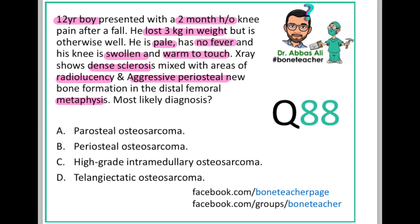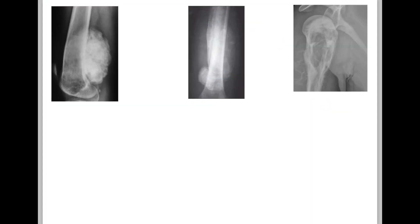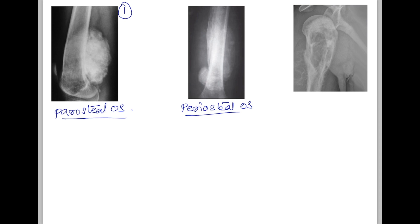In order to answer this question, we need to understand the various types of osteosarcoma. There are three X-rays shown here. X-ray number one is your parosteal osteosarcoma, X-ray two is your periosteal osteosarcoma, and X-ray three shows your telangiectatic osteosarcoma.